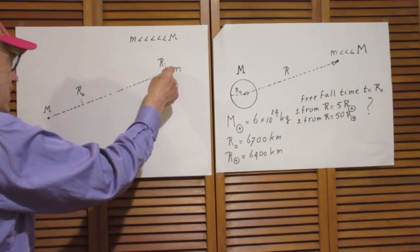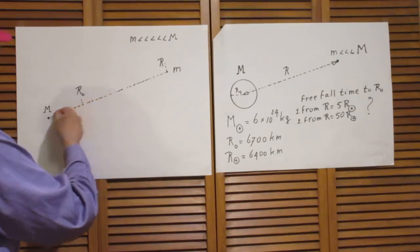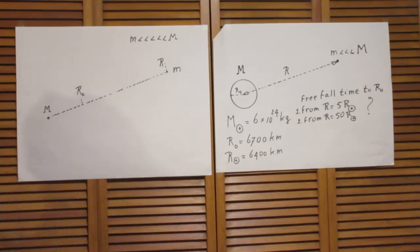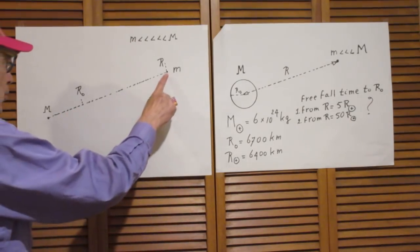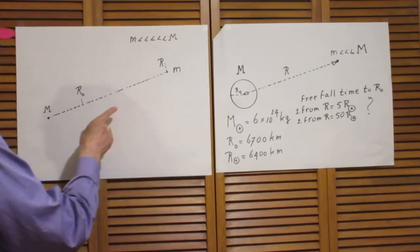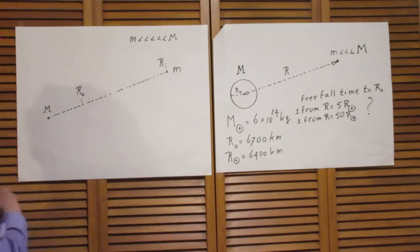And so it will radially fall in, increasing its speed on the way down. And I want you to calculate how much time it takes to go from capital R to a distance R0 from the center.